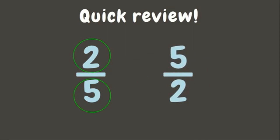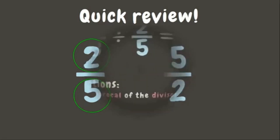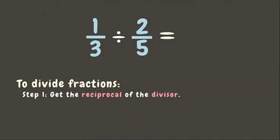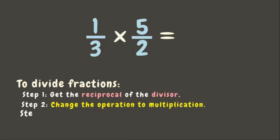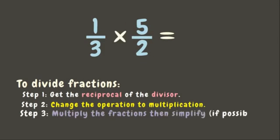The reciprocal of two-fifths is five-halves. Now let us go back to our problem and get the reciprocal of the divisor two-fifths. The next step is we need to change the operation to multiplication.